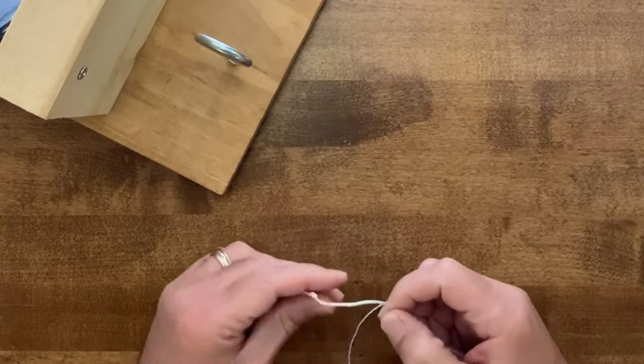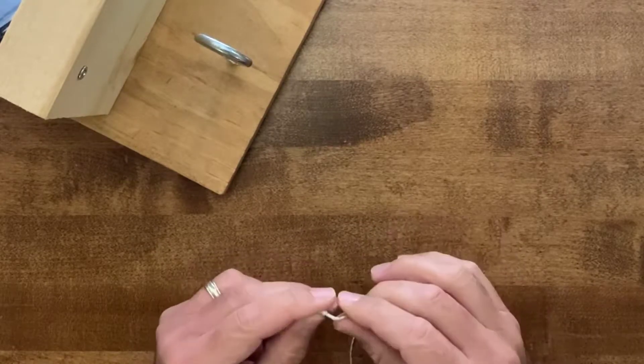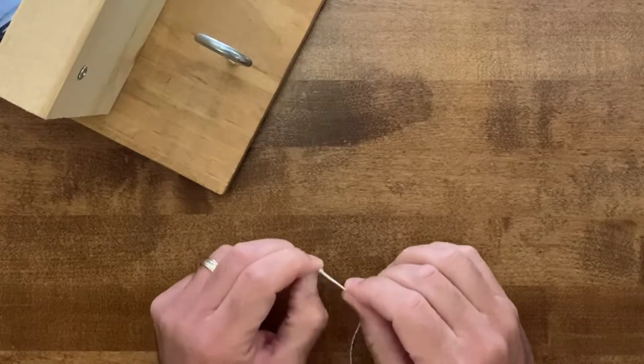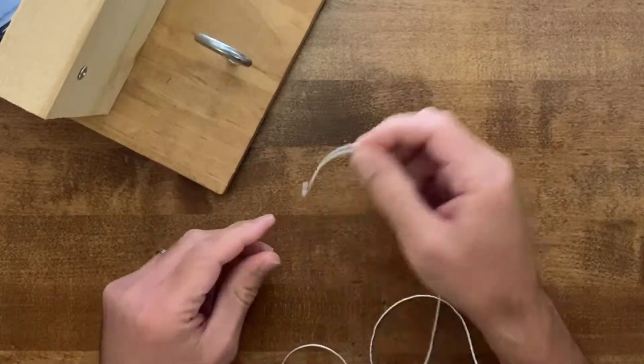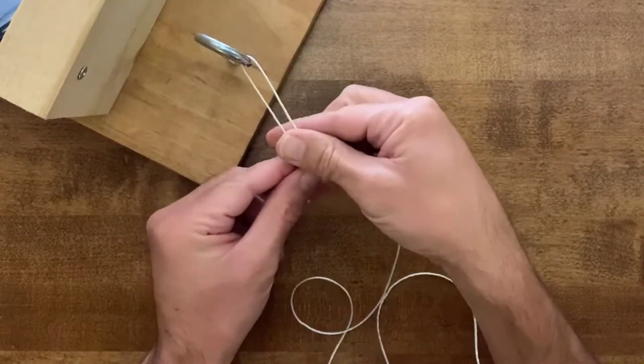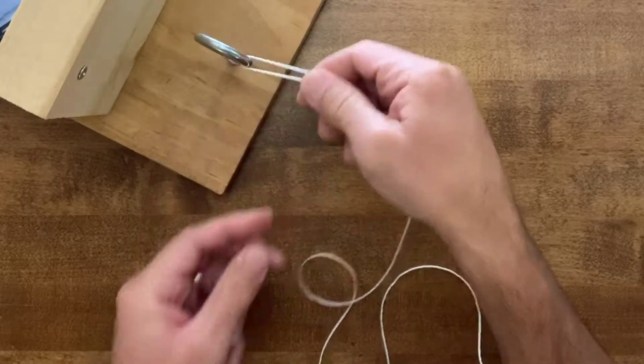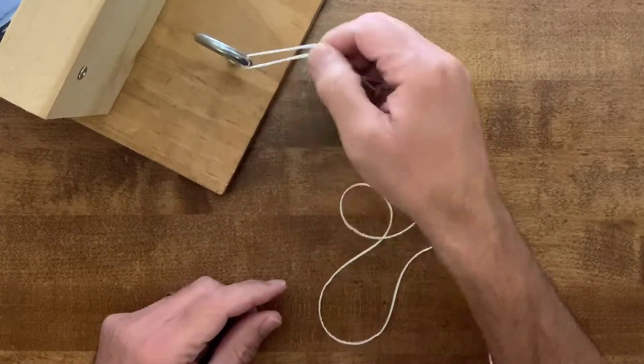We're going to tie the non-slip loop knot, and this is a fantastic knot for fishing with lures as it will leave a loop at the end of the line which will give your lure much more free action whenever you're pulling it through the water.